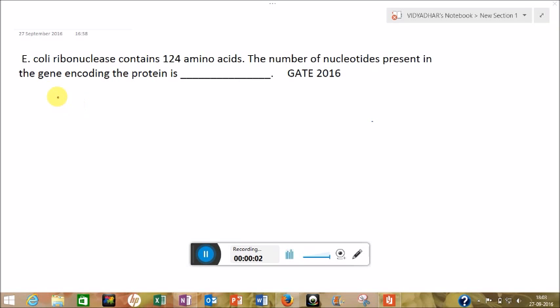Hello friends, let's solve one more question. The question is: E. coli ribonuclease contains 124 amino acids. The number of nucleotides present in the gene encoding the protein is...